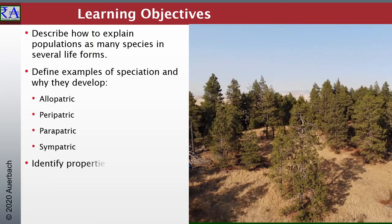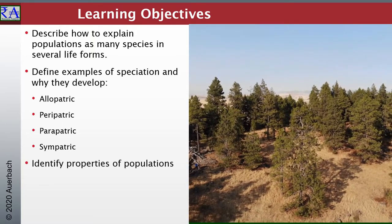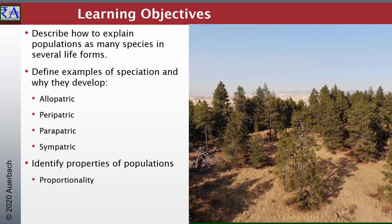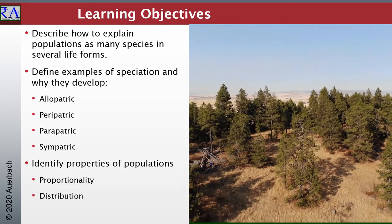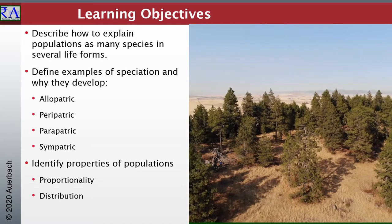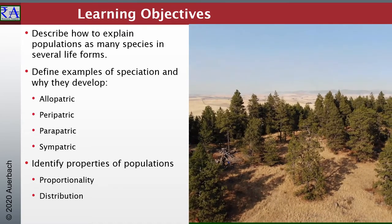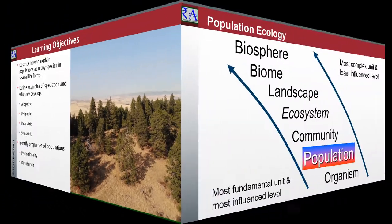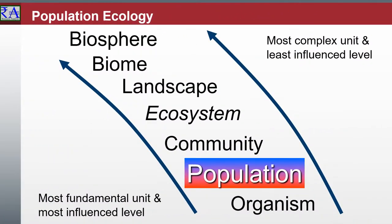Closely associated with population and evolutionary ecology is community ecology, which deals with the physical and biological structure of communities and community development. To launch into inquiries, we investigate population genetics. Population ecology is evolutionary ecology that deals with the role of natural selection in physical and behavioral adaptations and speciation.